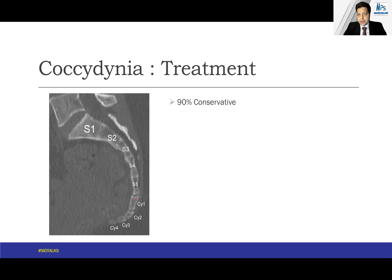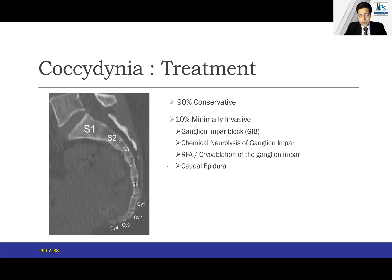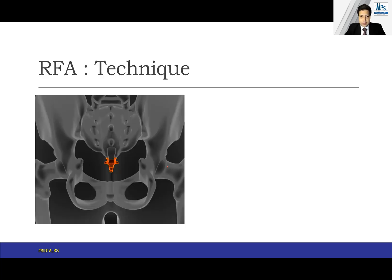About 90% of patients can be managed conservatively, but the remaining patients will require minimally invasive procedures. Many procedures are described — the simplest being a block with local anesthetic and steroid. The next option is a neurolytic agent such as alcohol, but more precise treatment involves radiofrequency ablation or cryoablation. In some cases, especially for referred pain, caudal epidural may also work. If these procedures fail to elicit a good response, surgery can be advised, though the results are not very well proven.